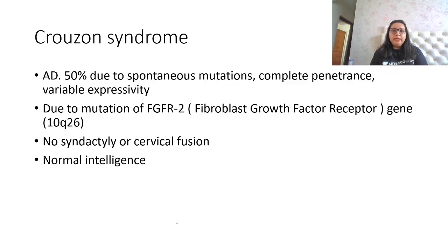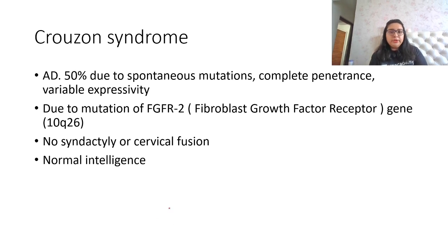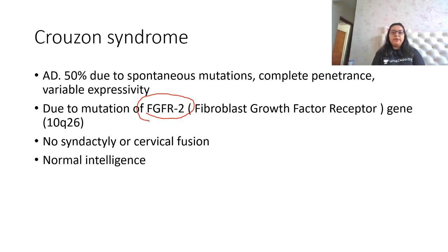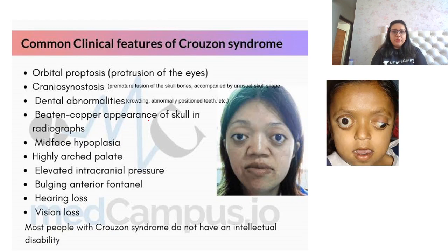Next is Crouzon syndrome, also an autosomal dominant condition. About 50% of cases occur due to spontaneous mutation, with complete penetrance and variable expressivity. The mutation is mostly at the FGFR2 gene — fibroblast growth factor receptor gene. There is no syndactyly or cervical fusion, and these children have normal intelligence. Vision is a major issue.